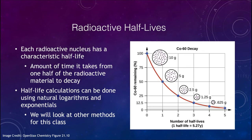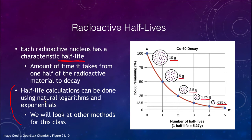Now let's look at half-lives. Any radioactive element has a characteristic half-life, defined as the amount of time it takes for one half of the radioactive material to decay. Starting with 10 grams, after one half-life you have 5 grams; after a second half-life, 2.5 grams — each half-life cuts the remaining amount by a factor of two. You can use natural logarithms and exponentials for exact calculations, but in this class we'll use a table-based approach instead.